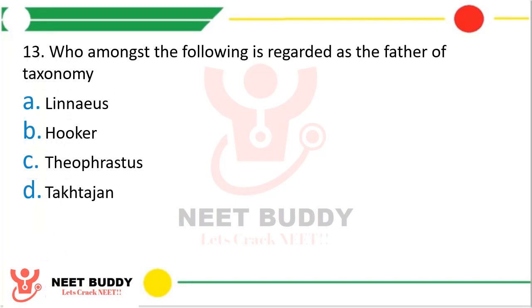Question 23. Who amongst the following is regarded as the father of taxonomy? Linnaeus, Hooker, Theophrastus, or Taktajan? The correct answer is Option A, Linnaeus is known as the father of taxonomy.